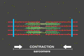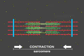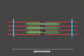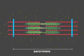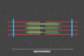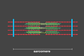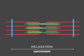Calcium is then quickly returned to the sarcoplasmic reticulum by the action of a calcium pump. Without calcium, myosin releases actin, and the filaments slide back to their original positions.